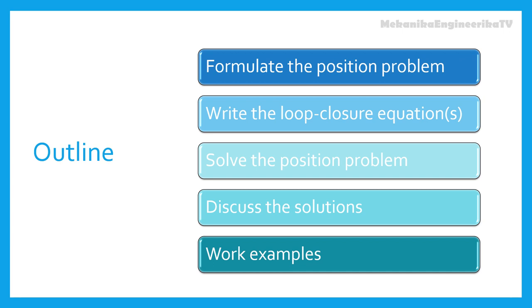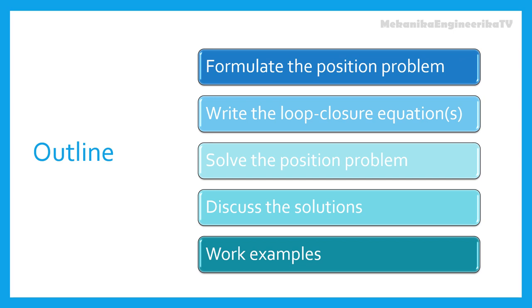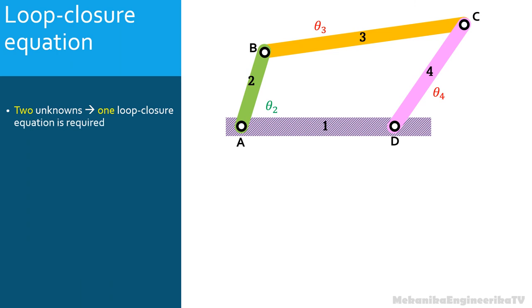We have completed the problem formulation part and are going to start with the second part dealing with the writing of the loop closure equation. The position problem has 2 unknowns — the coupler angle and the link 4 angle — thus 1 loop closure equation is required. As each loop closure is a vector equation, in planar kinematics each vector equation gives 2 algebraic equations, so by writing 1 loop closure equation we will have at the end 2 algebraic equations.